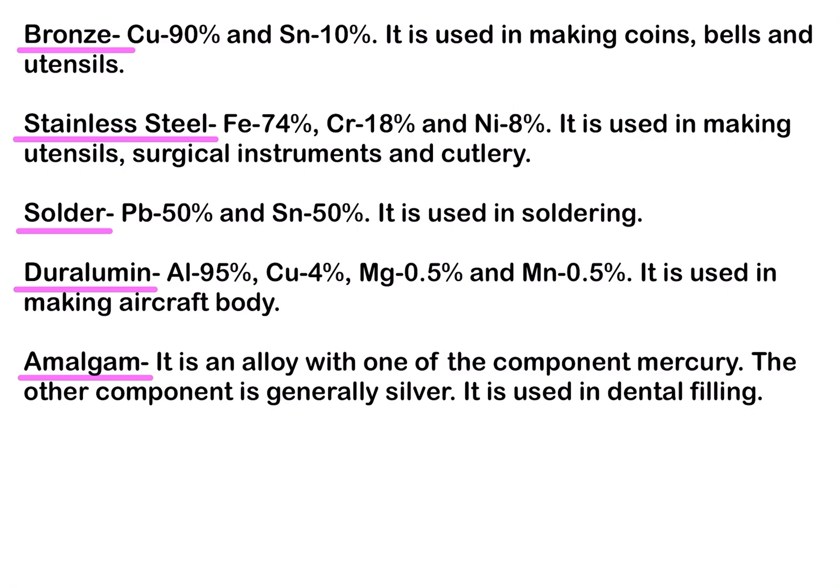Stainless steel is composed of 74% iron, 18% chromium and 8% nickel, and sometimes a small percentage of carbon. It is used in making utensils, surgical instruments and cutlery. Stainless steel is harder than pure iron and another important property is that it does not rust.